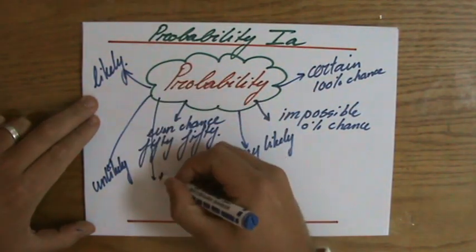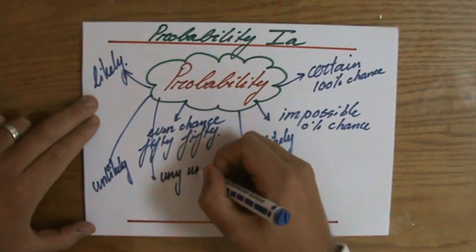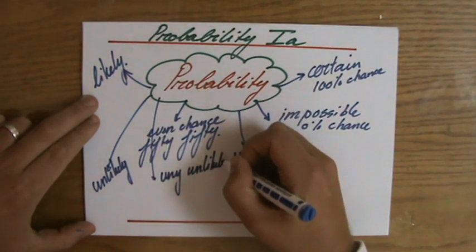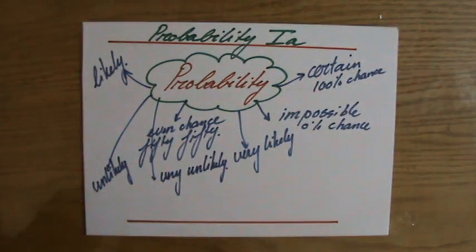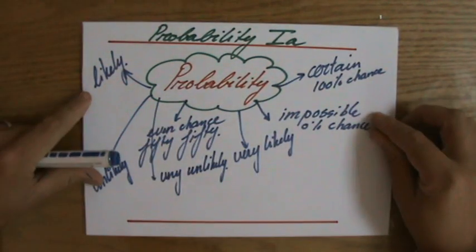And then you have very unlikely. Very unlikely. Unfortunately, it's very unlikely I'm going to win the jackpot tonight. So these are all sorts of words you're going to encounter.